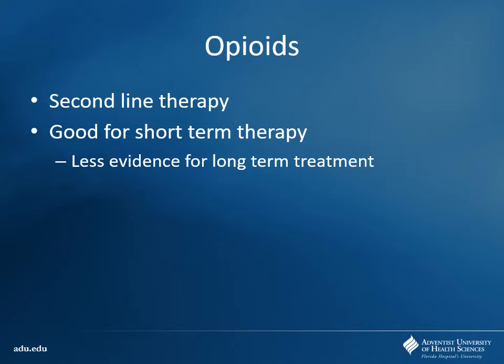Once patients get on opioids, it's very difficult to come off. Remember all the side effects: constipation, respiratory depression if you take too much. The reversal agent is naloxone or Narcan. The biggest thing you worry about with chronic use is addiction and physical dependence. Not everyone becomes addicted, but the longer they're on it, the more likely they are to develop physical dependence, and that can turn into addiction if you're not managing pain effectively.